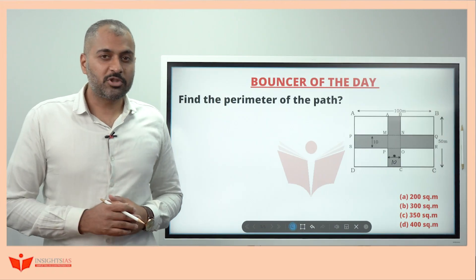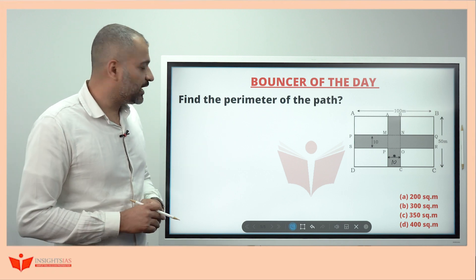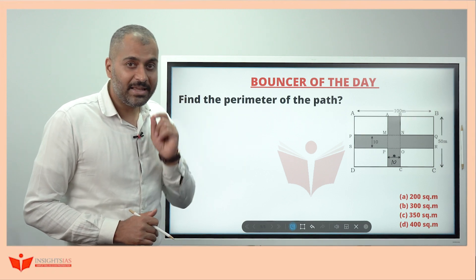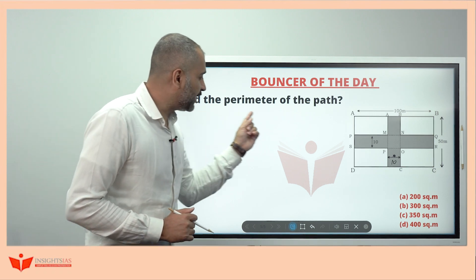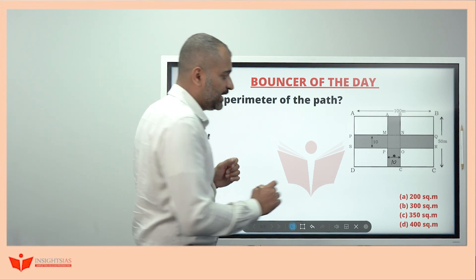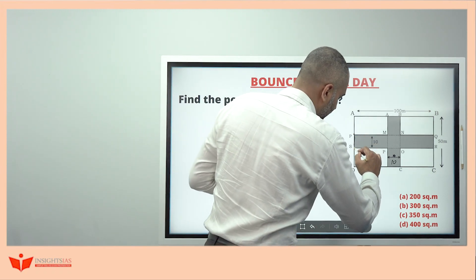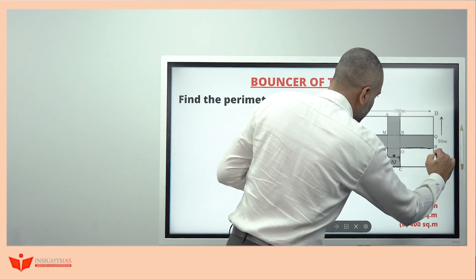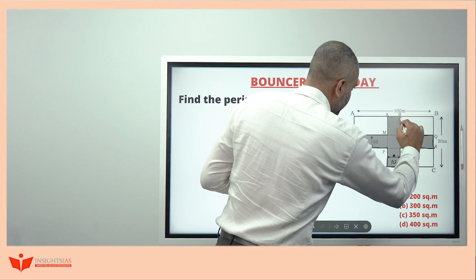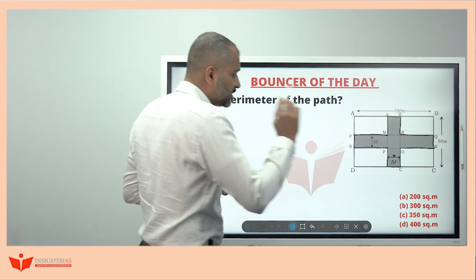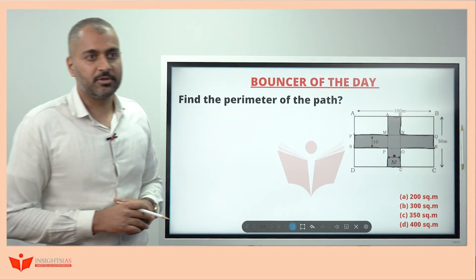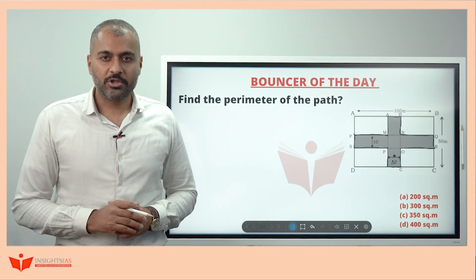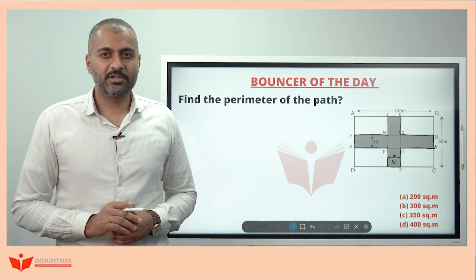This is the bouncer of the day question — I have taken the same figure as earlier, but instead of area, here we have to find the perimeter, which is the length of the outer boundary. These are your options. Thank you and keep watching — we'll meet you in the next video.